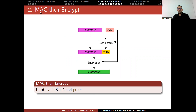The algorithms are clear from their names. In MAC-then-Encrypt, you take the plaintext, create a tag using a hash function (possibly in HMAC mode), concatenate the tag to the plaintext, and then perform encryption to produce a single ciphertext. This approach is used in TLS 1.2 and prior, but not in TLS 1.3.